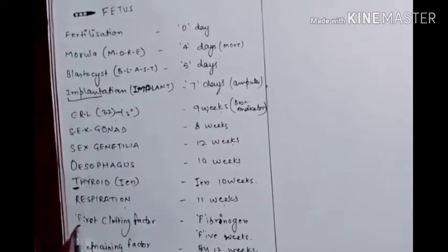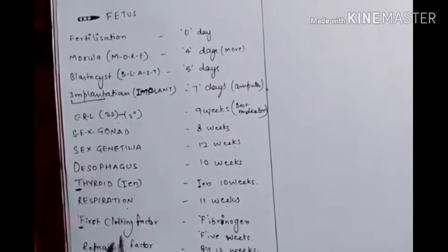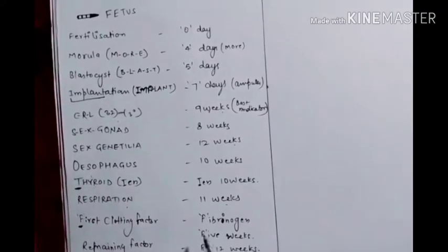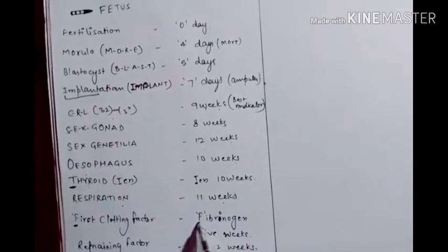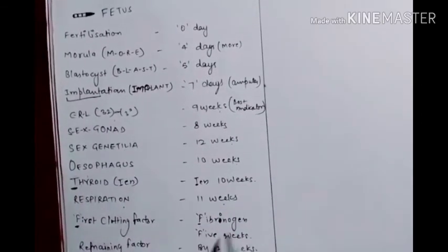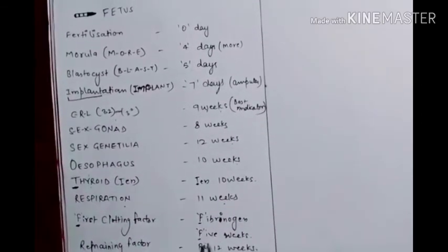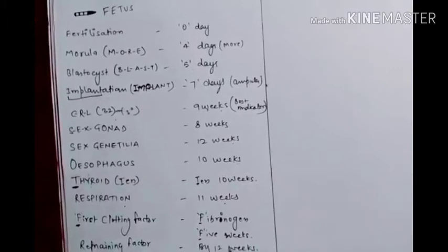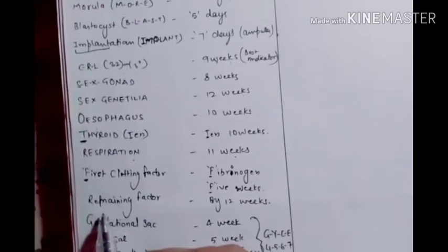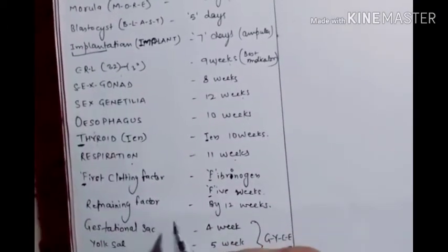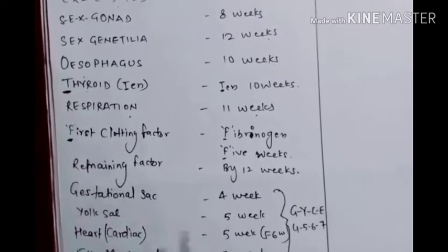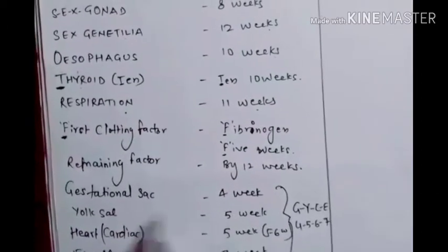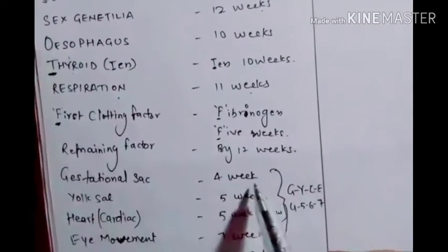For clotting factors: the first clotting factor is fibrinogen. The mnemonic is 'FF' — first F means fibrinogen, second F means five weeks — so fibrinogen occurs at five weeks. The remaining clotting factors will occur at 12 weeks.